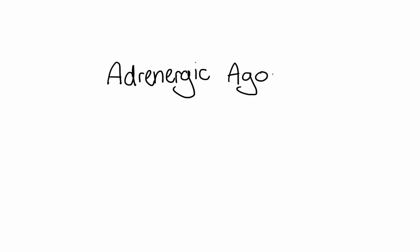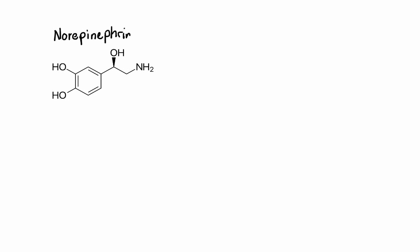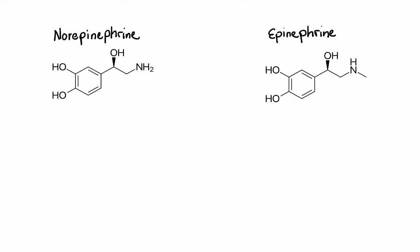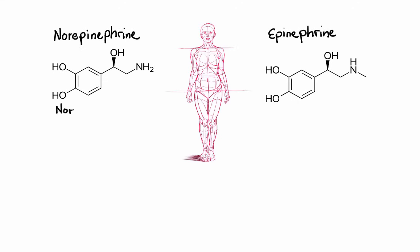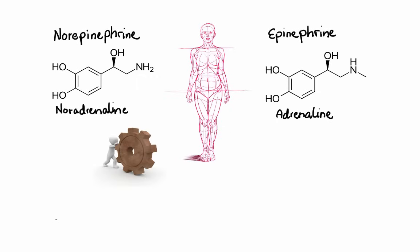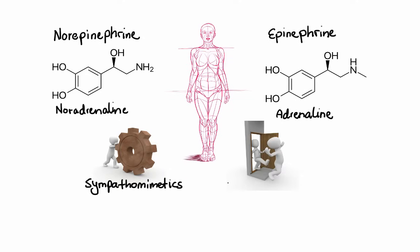In this lecture, I'm going to talk about adrenergic agonists. Adrenergic agonists are a large group of drugs that mimic the actions of norepinephrine and epinephrine, which naturally occur in our bodies. Norepinephrine is also known as noradrenaline, and epinephrine is also known as adrenaline. Collectively, the agents that activate adrenergic receptors are called sympathomimetics, and the agents that block the activation of adrenergic receptors are called sympatholytics.